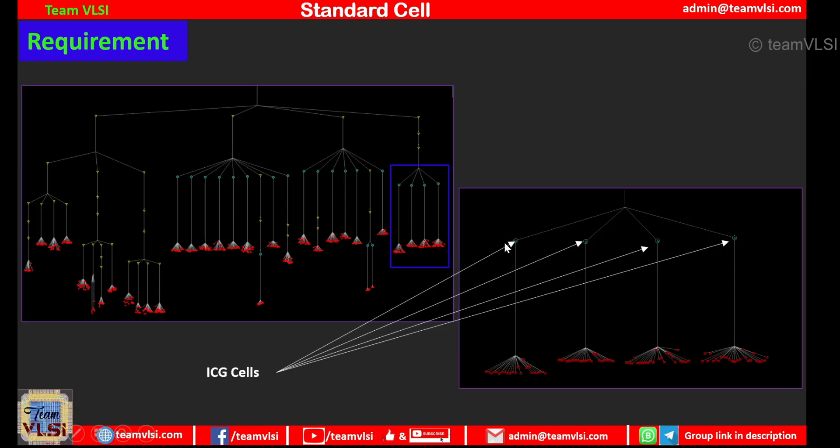So in ICG cells we have a control through which we can stop the clock progression beyond these cells. So we can stop the clock propagation to all these cells and we can save lots of dynamic power.